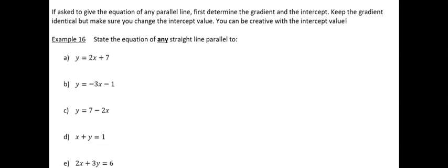A common question you could be asked is to find the equation of any parallel line. To do this, just recognize what the gradient is of the line you want to be parallel to, keep it the same for your new line, but remember to change your intercept. For example, given y = 2x + 7, state the equation of any straight line parallel to it.